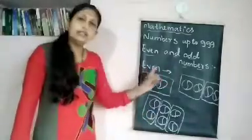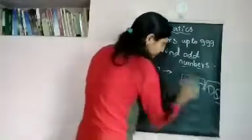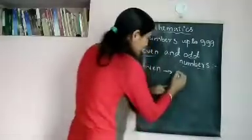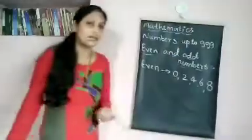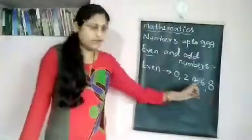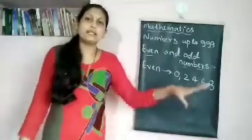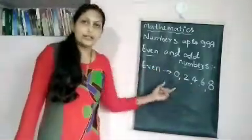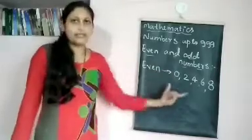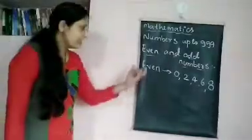Even numbers are numbers like 0, 2, 4, 6, 8, 10, 12, 14, 16, 18, 20, 22, 24. These numbers can be made into pairs — we can group them into groups of two. Such numbers are called even numbers.